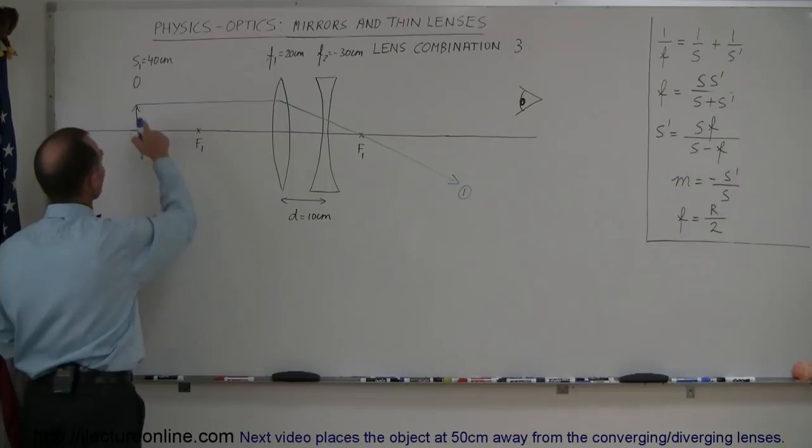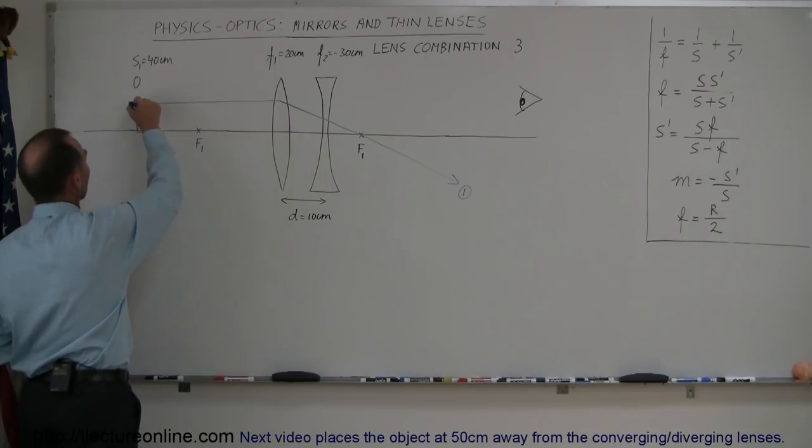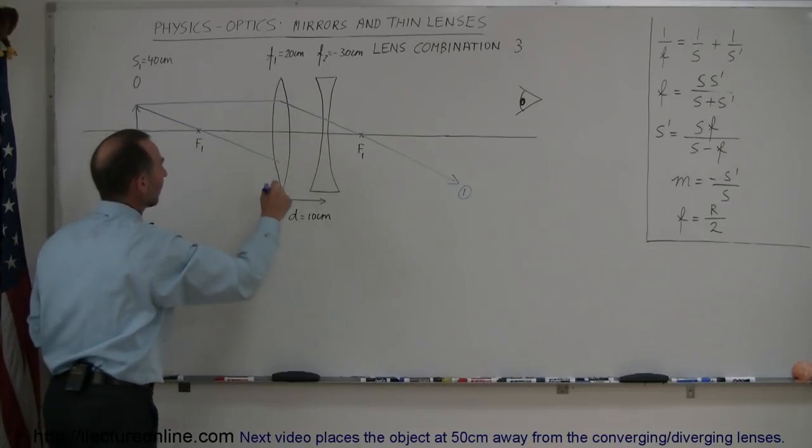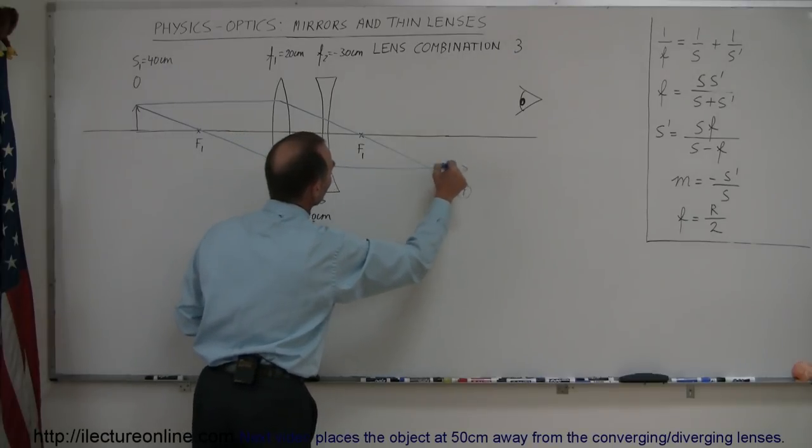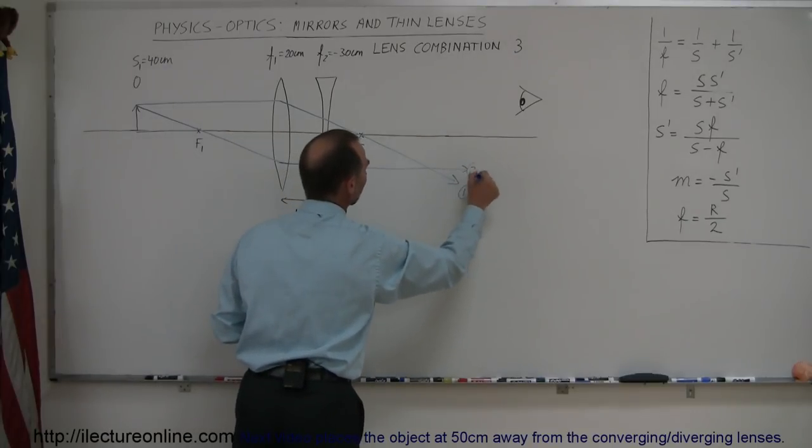Then we draw a second ray which is from the object to the focal point on the front side of the lens until we hit the lens, then the ray will diverge and continue on straight parallel to the normal. That would be ray number two.